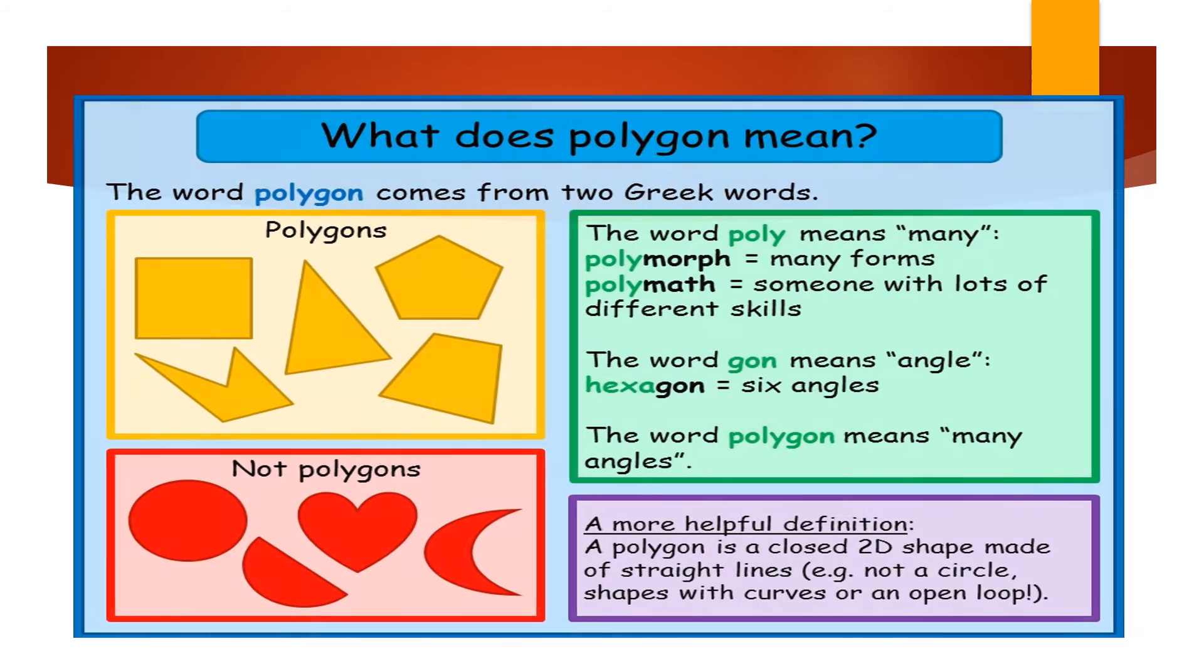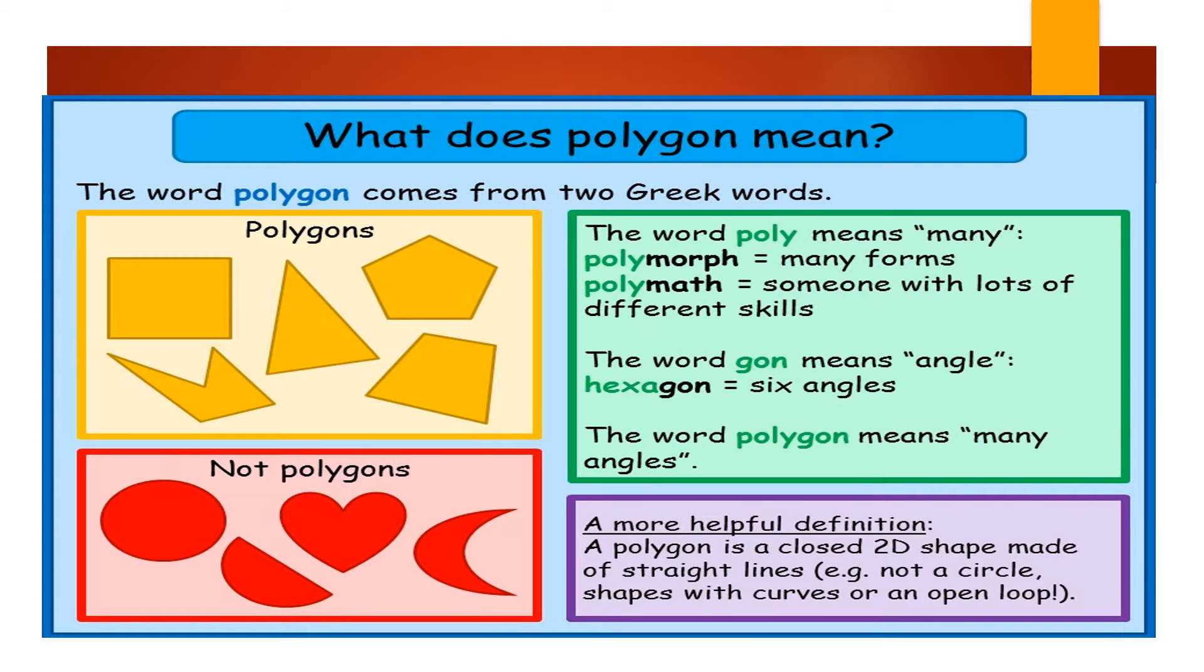What does polygon mean? The word polygon comes from two Greek words. The word poly means many: polymorph equals many forms, polymath is someone with lots of different skills. And the word gon means angle: hexagon equals six angles.